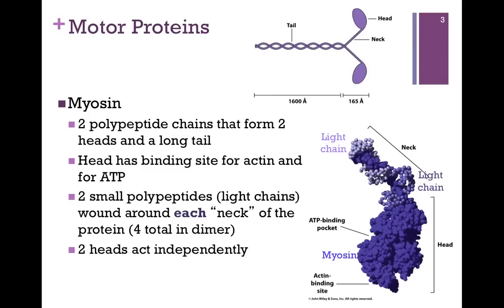Let's look first at myosin. The basic fundamental unit is a dimer, so there are two polypeptide chains. Each chain contains a globular head region, a long straight neck region, and an alpha helical tail. As these associate to form dimers, those tails coil around each other. That's a coiled-coil interaction, as we saw for some of our structural proteins.